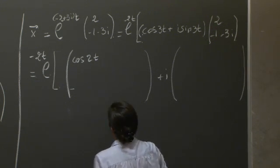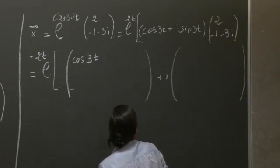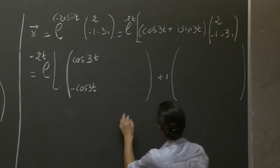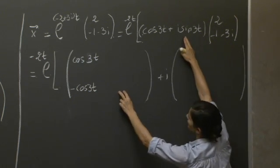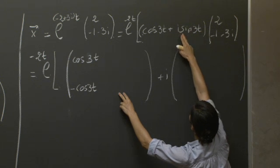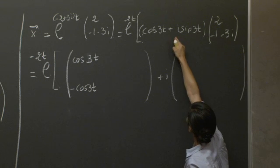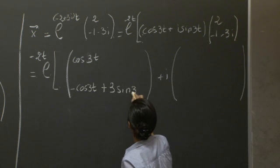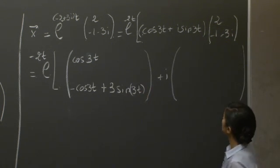So minus cosine 3t. Now where are we going to have another real part here? It's going to come from a multiplication of i sine 3t by 3i. So the two i's together give us a minus 1, and we end up with a plus 3 sine 3t. So we're done for the real part.